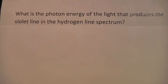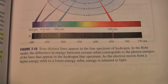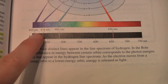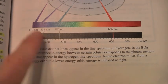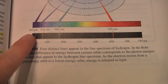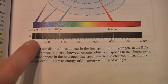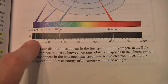Here's an example problem. What is the photon energy of the light that produces the violet line in the hydrogen line spectrum? First, I need to take a look at what the wavelength is that I'm given. If you turn to page 253, you'll find the hydrogen line spectrum, and 410 nanometers is the wavelength for the violet line. Can we convert wavelength to energy? Absolutely.